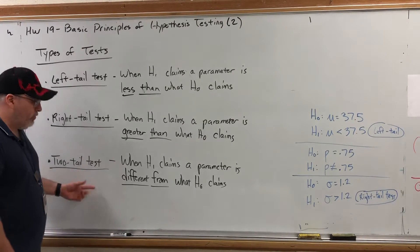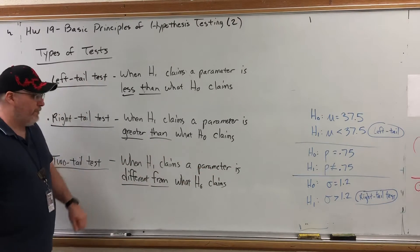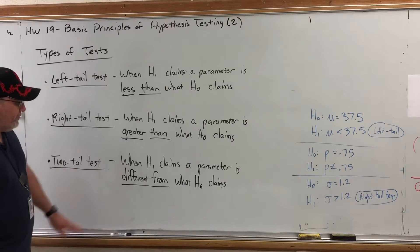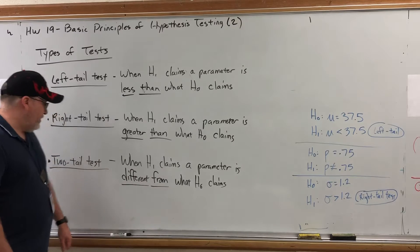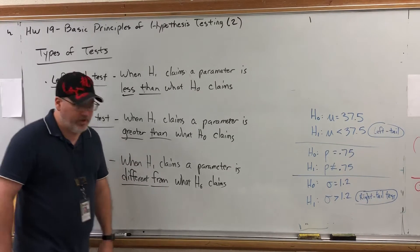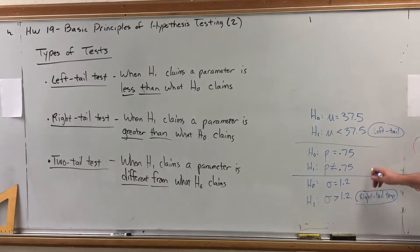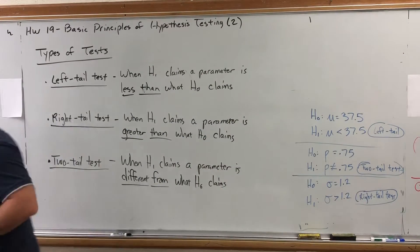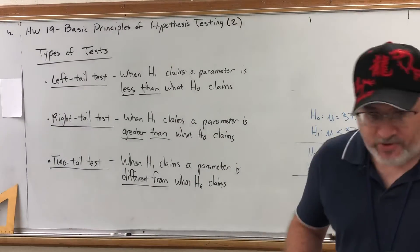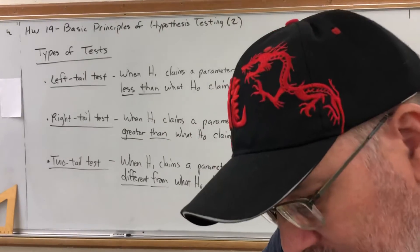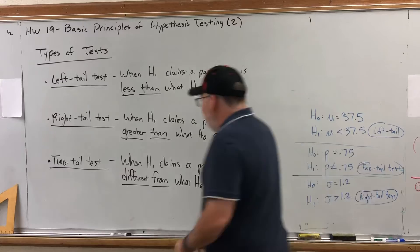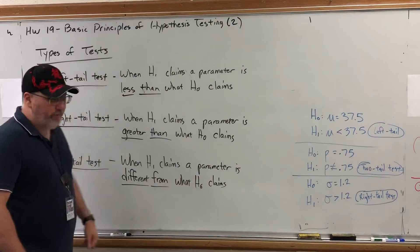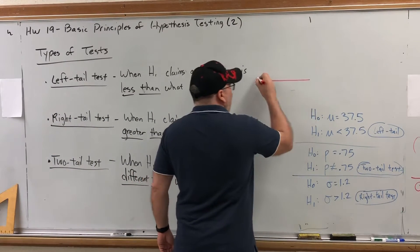The third type is a two tail test. A two tail test occurs when the alternative hypothesis claims a parameter is different from what the null hypothesis claims. 'Different from' is synonymous with 'not equal to,' so anytime the alternative hypothesis contains the not-equal-to sign, it is a two tail test. The center pair of hypotheses is a two tail test. Left tail, right tail, and two tail refer to the tails under a bell curve.